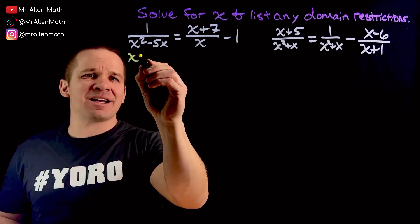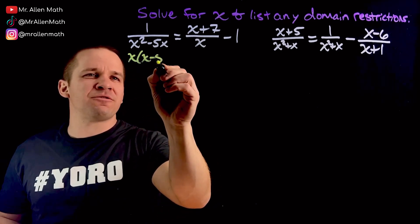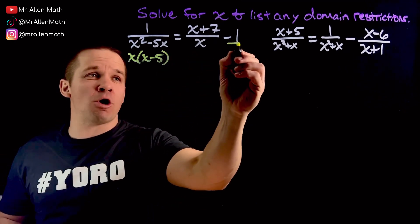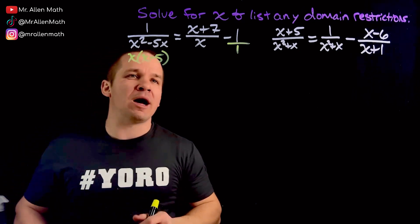I can factor this guy and get x out, and I'll have x minus 5 left over. No factoring here, no denominator here. Really, it's just over 1, if you will.